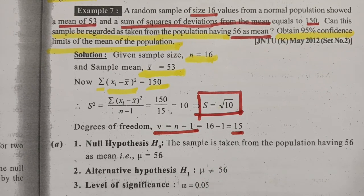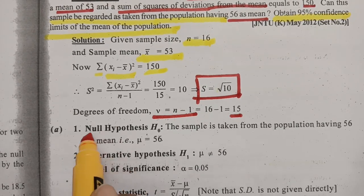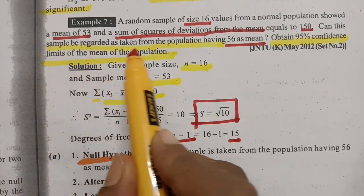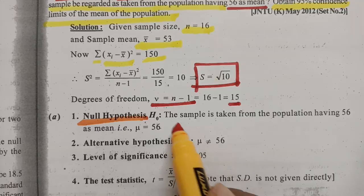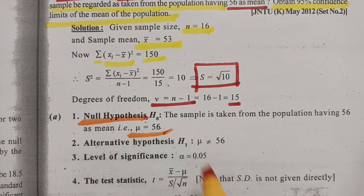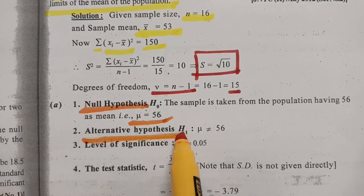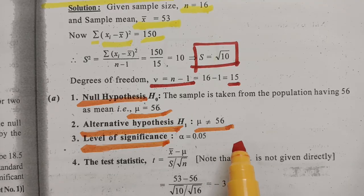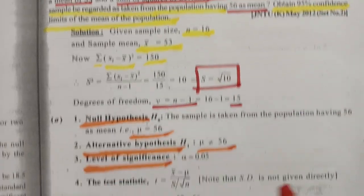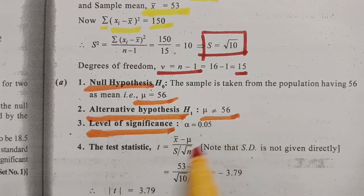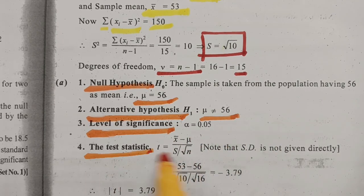Now let's go through the five steps. Step 1, null hypothesis H₀: μ = 56, meaning the sample is taken from a population with mean 56. Step 2, alternate hypothesis H₁: μ ≠ 56. Step 3, level of significance: since we need a 95% confidence interval, α = 0.05, which is the 5% level of significance.